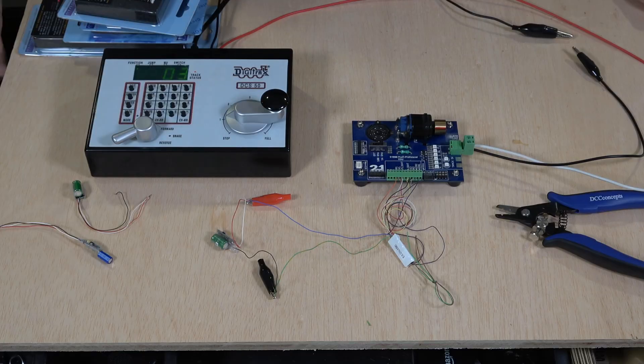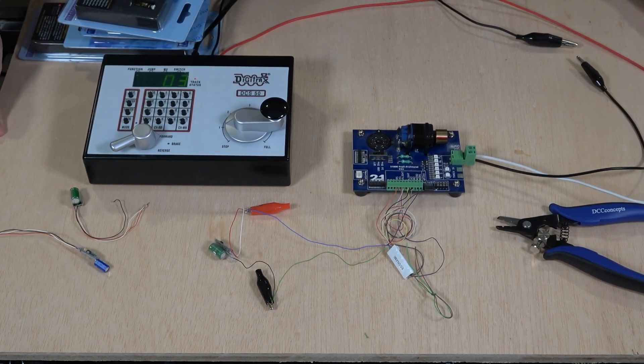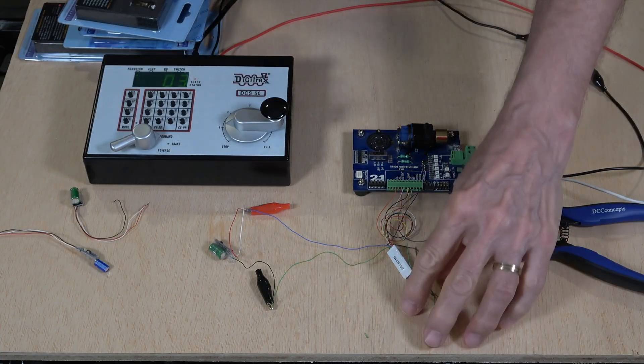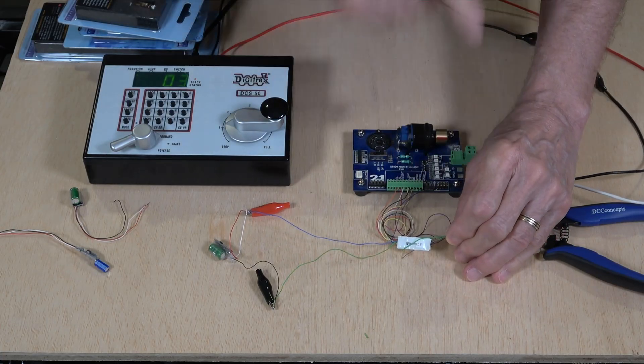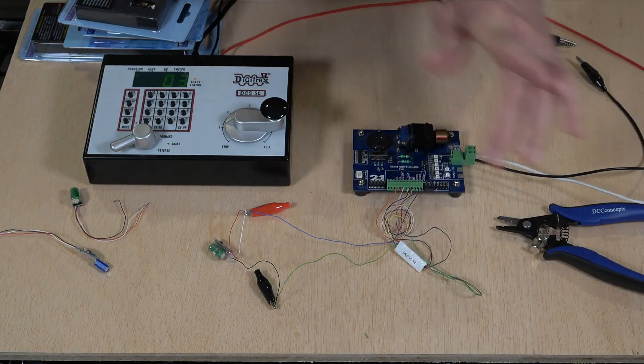So the question was, can you use a 3-wire Stay Alive with a decoder that requires a 2-wire Stay Alive?